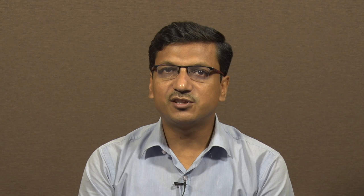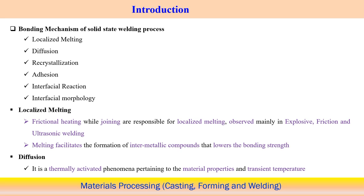The recrystallization mechanism involves sweeping the grain boundary and, through grain boundary migration, new recrystallized grains form and provide bonding. There is also atomic-scale adhesion, where two components are joined by atomic attraction. Some interfacial reactions occur at the interface — for example, inter-metallic compound layers can form that help bond two components. Certain welding processes create specific interfacial morphologies, and these deformation patterns help interlocking of two solid components.